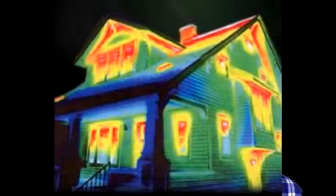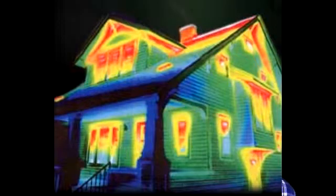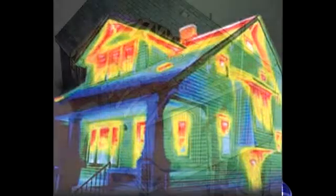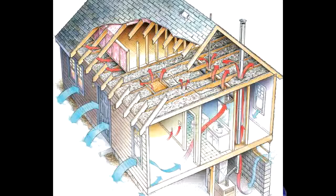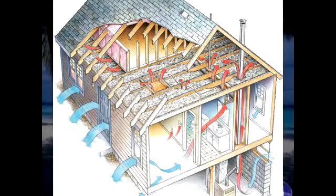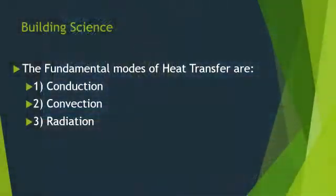With our houses, especially in the wintertime, we have heat transfer where the heat inside our house is trying to get to the colder air. Those molecules are trying to pass through our wall cavity and get to the outside. With basic heat transfer in general, we have three avenues of transfer: conduction, convection, and radiation.